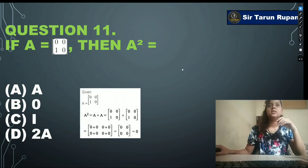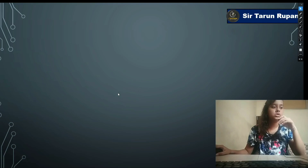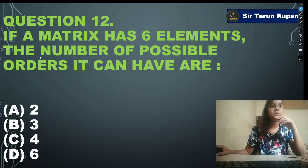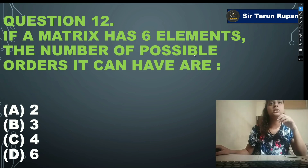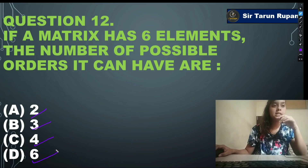Next question: if a matrix has six elements, the number of possible orders it can have is — option A: 2, option B: 3, option C: 4, option D: 6. Our correct answer is option C: 4.